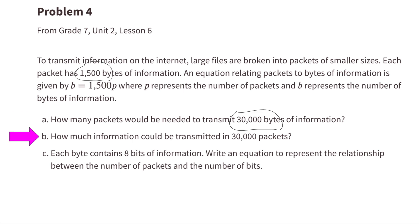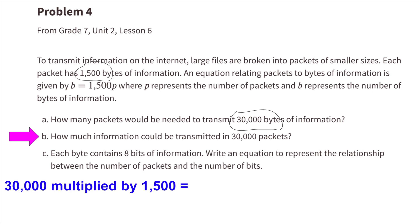Part B: how much information could be transmitted in 30,000 packets? 30,000 multiplied by 1,500 equals 45,000,000 bytes. So 45,000,000 bytes of information could be transmitted in 30,000 packets.